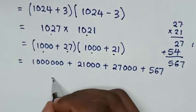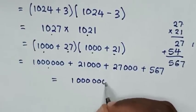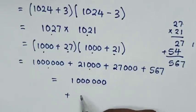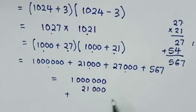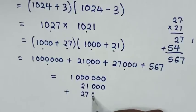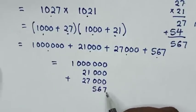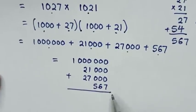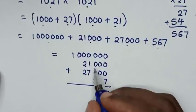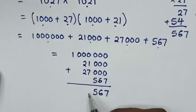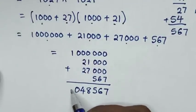Then it will be equal to the sum: 1 million, plus 21,000, plus 27,000, plus 567. Adding these together: the units digit is 7, tens is 6, hundreds is 5, thousands: 1 plus 7 is 8, ten-thousands is 4, hundred-thousands is 0, millions is 1. So the final answer is 1,048,567.